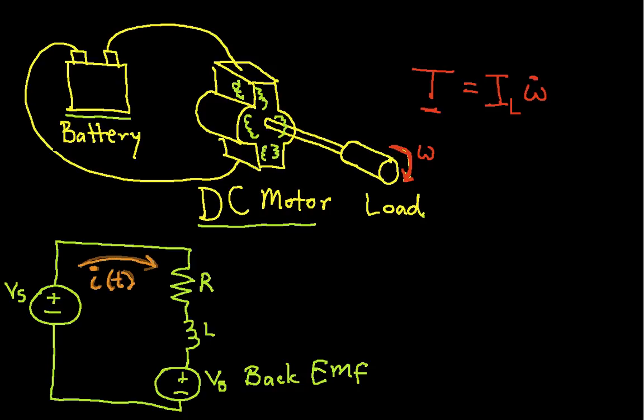We're going to label this current I, and we're going to solve for this current in just a minute. But the relationship that is useful to us is, it turns out that the torque generated by a DC motor is equal to some constant, which we'll call K sub T. We're actually going to end up with a couple constants here. But the torque is K sub T times the current going through the motor.